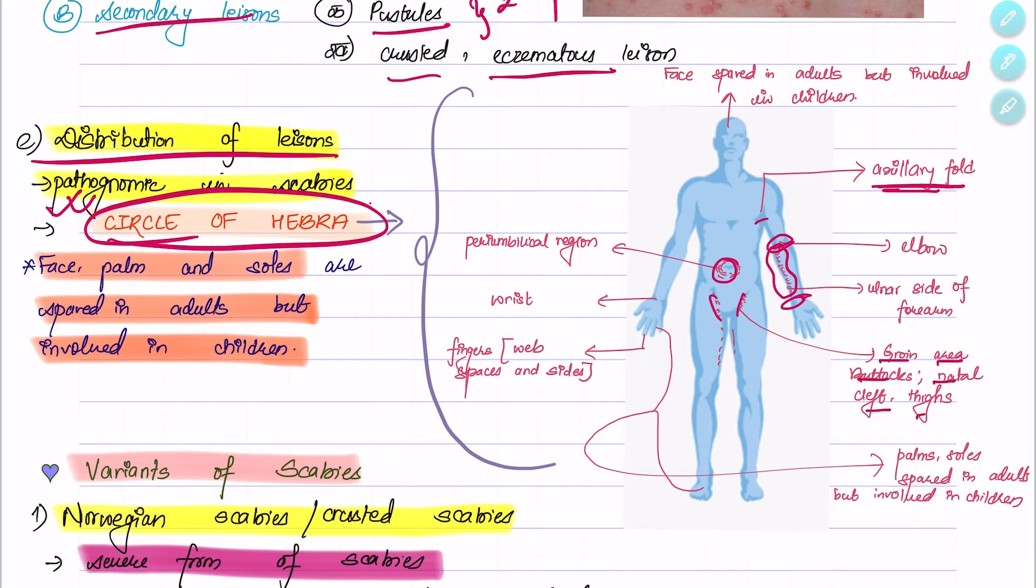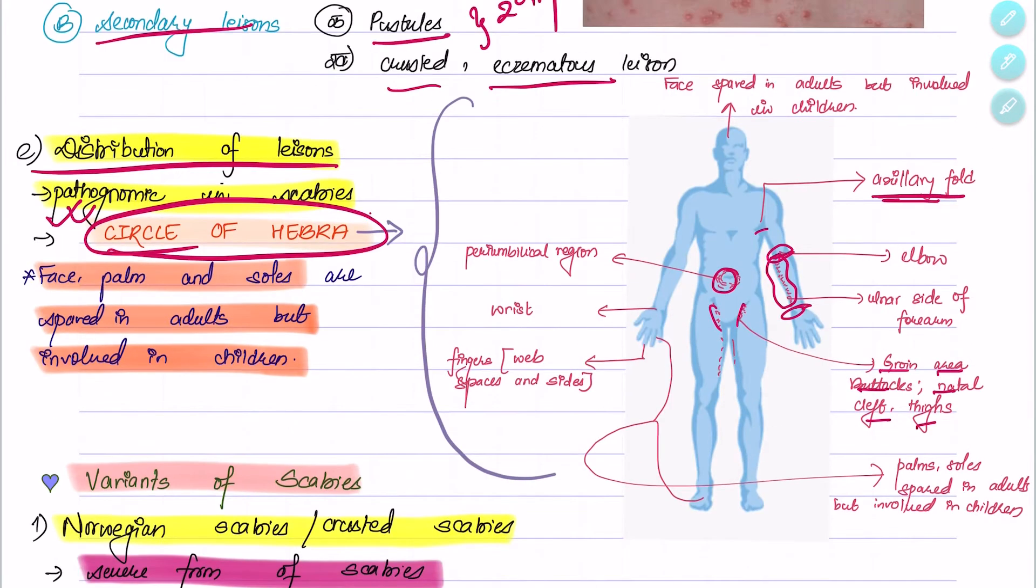If the patient is an adult, the lesions will not be seen in the face, palms, and soles. But if it is a child, the face, palms, and soles will also be involved. In the fingers, the lesions are seen in the web spaces and on the sides.